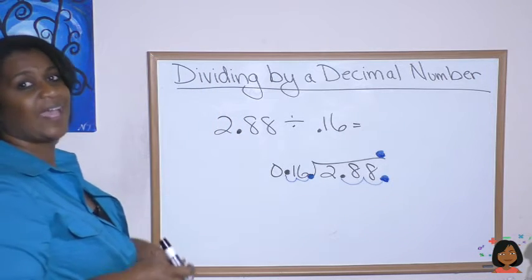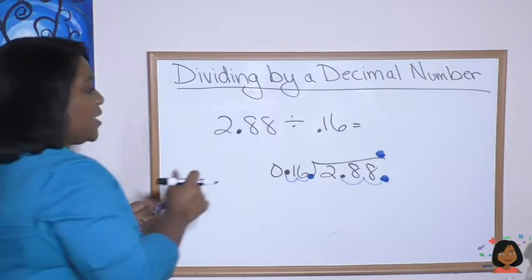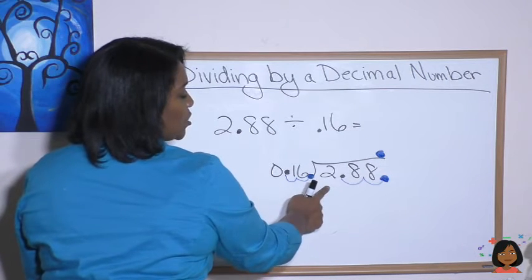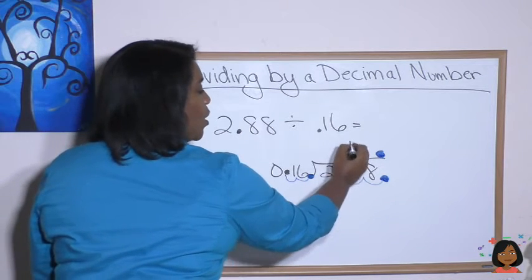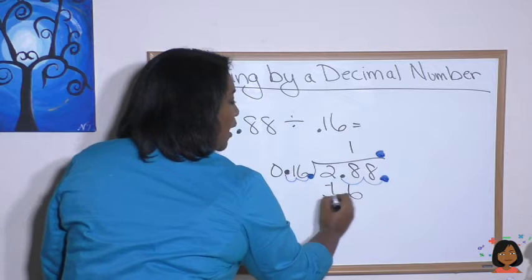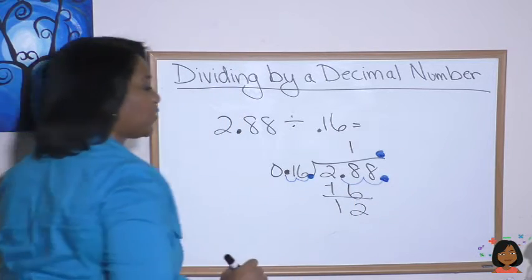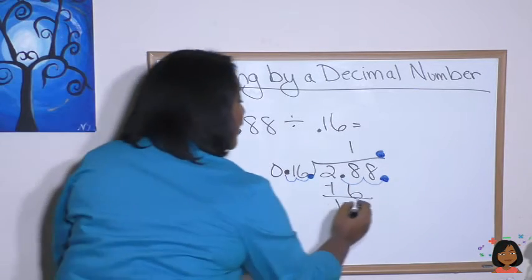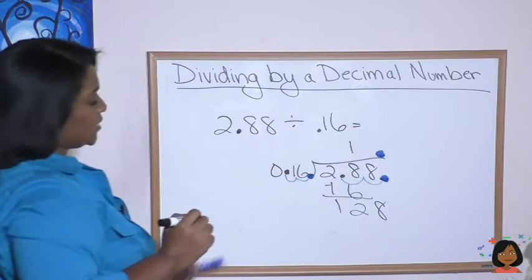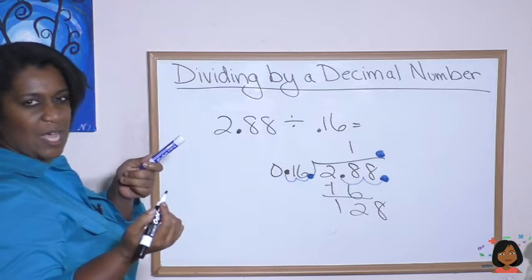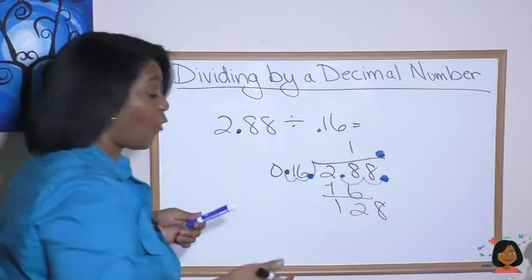16 can't go into 2, but it can go into 28 one time. And 12 is left over. Let's bring down the 8. Let's see. 16 times what gives us 128? I've got to do it over to the side. 16 times, let's see.